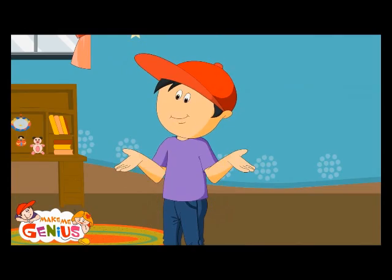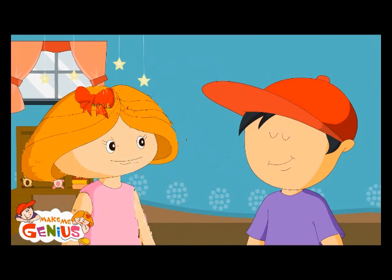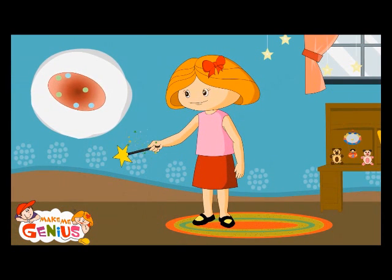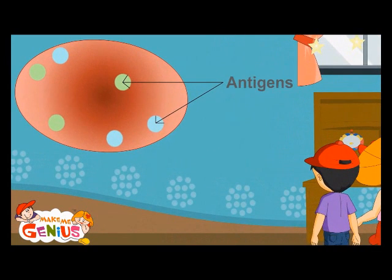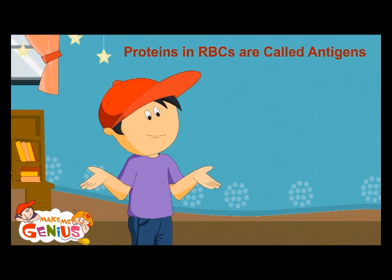I have one other question. Do we all have the same kind of blood? Very good question. Everybody's blood is almost the same, but there is a difference — in antigens. What are antigens? Let me show you one chart. Red blood cells in blood contain proteins. These are called antigens. So the proteins in RBCs are called antigens.